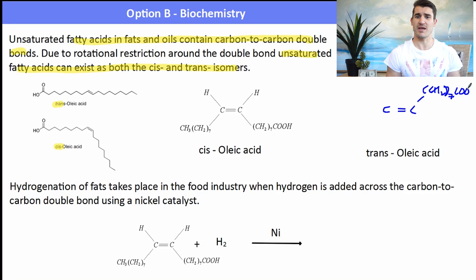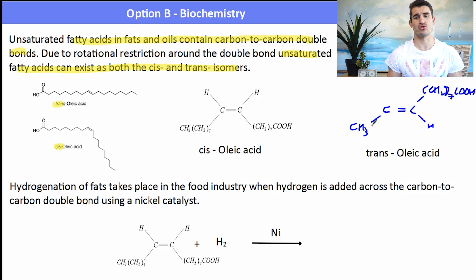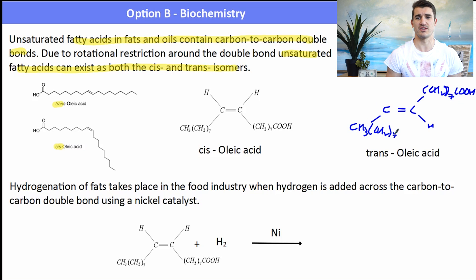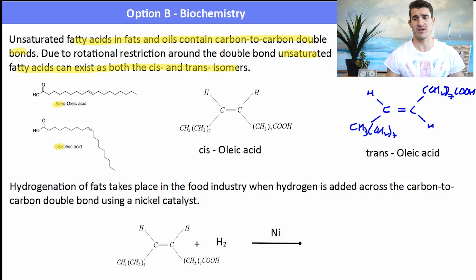Here we have cis oleic acid. Oleic acid is found in peanuts - one of my favourites. The trans variety would be where the functional groups are just across the double bond from each other. Drawing those two out, we now have the cis and the trans isomers.